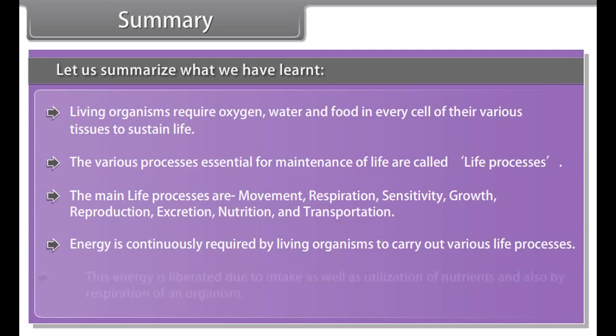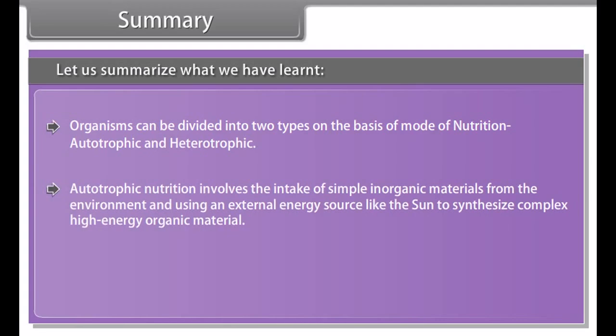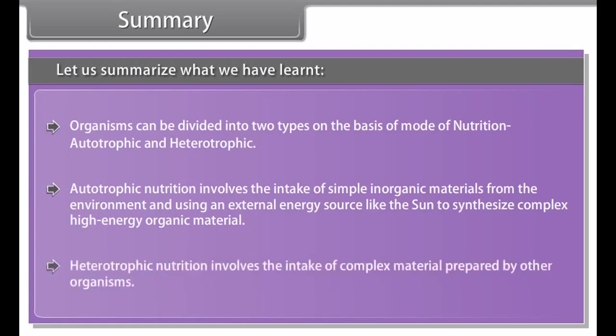Summary. Let us summarize what we have learned. Living organisms require oxygen, water, and food in every cell of their various tissues to sustain life. The various processes essential for maintenance of life are called life processes. The main life processes are movement, respiration, sensitivity, growth, reproduction, excretion, nutrition, and transportation.